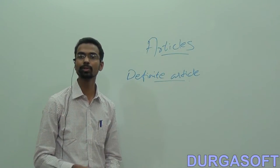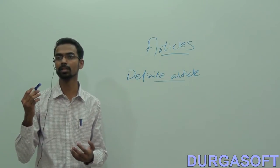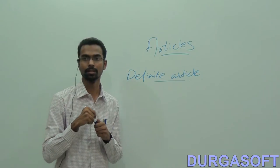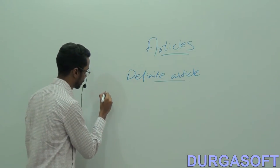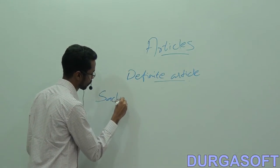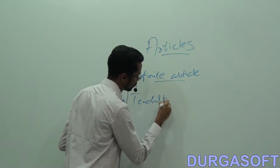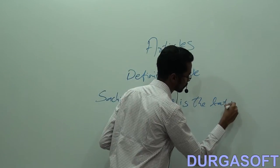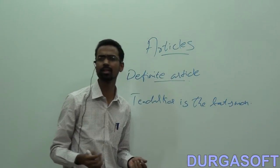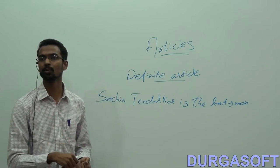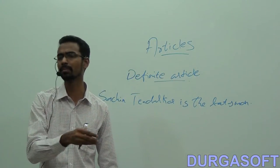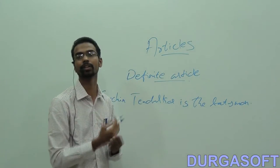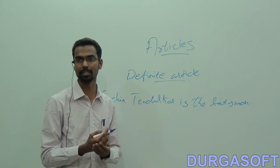The definite article can also be used before proper nouns when we represent a person as a quality. Look at this sentence: Sachin Tendulkar is the batsman. What do you mean when I say Sachin Tendulkar is the batsman? Here I mean Sachin Tendulkar is the perfect batsman or he is better than any other batsman.